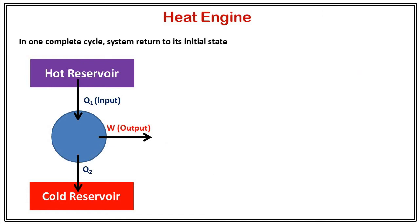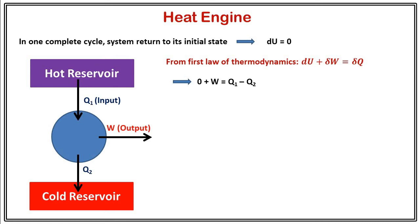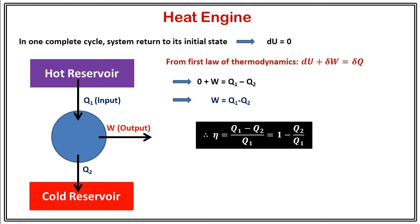Now we know in one complete cycle, as the system returns to its initial state, there is no change in internal energy, so du equals zero. From the first law of thermodynamics, du plus delta W equals delta Q, hence we can write work done equals Q1 minus Q2. So Eta becomes (Q1 minus Q2) divided by Q1, which simplifies to Eta equals 1 minus Q2 upon Q1. We know Q2 is always less than Q1, so Eta is always less than unity — meaning you cannot convert heat completely into work.